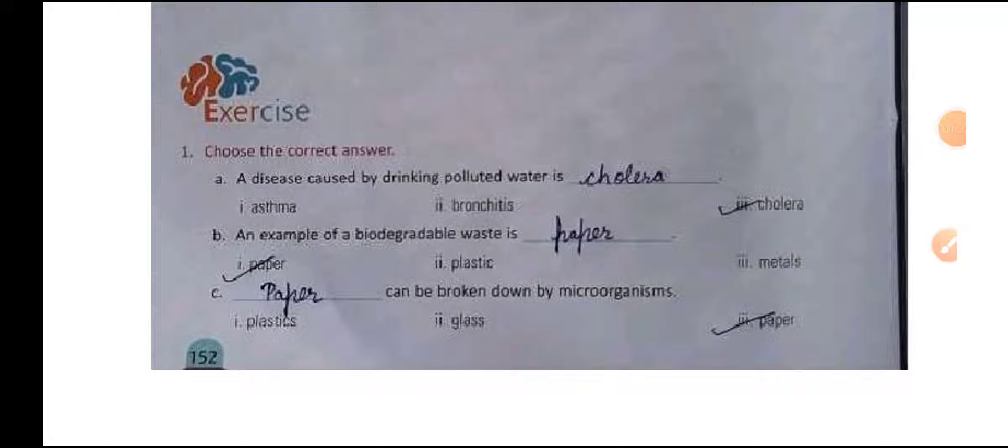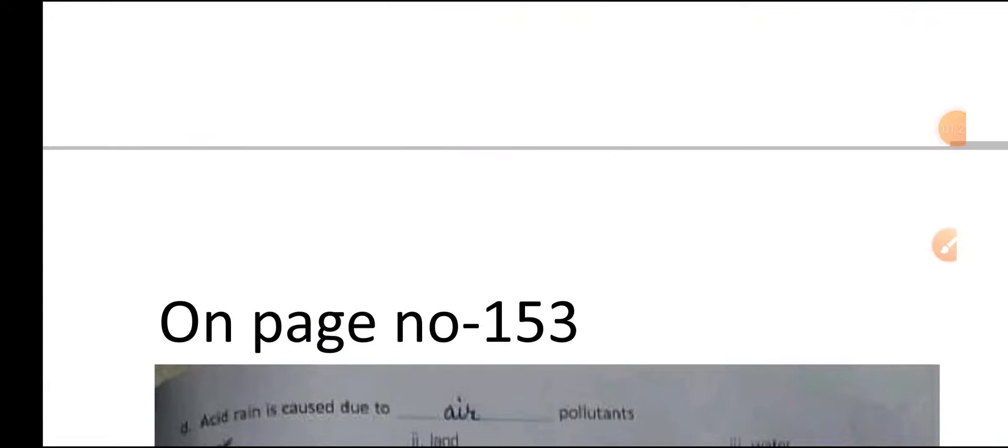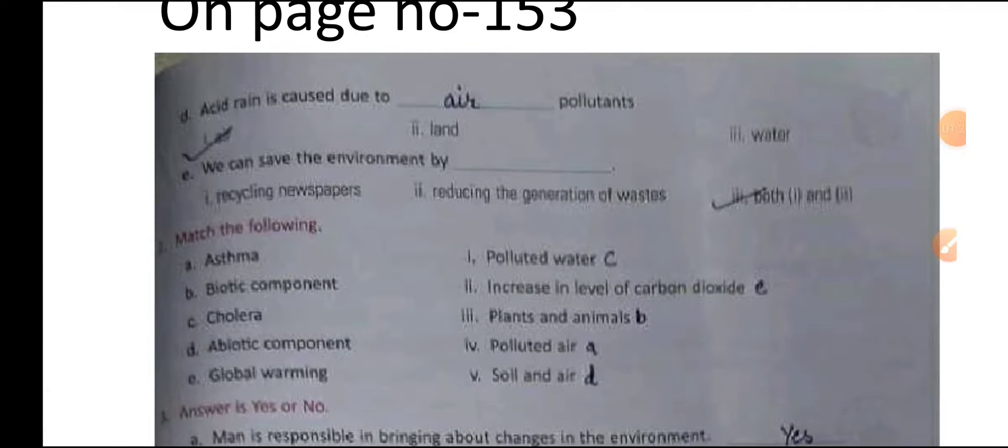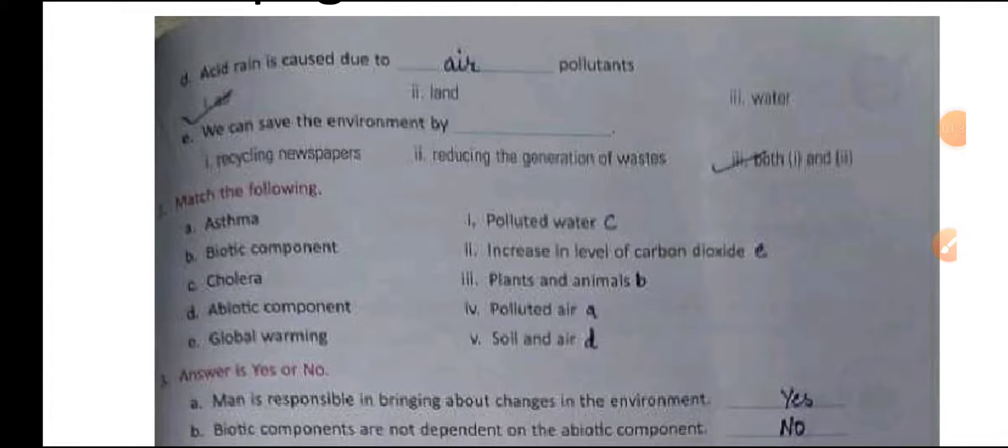Come on page number 153. Acid rain is caused due to polluted air. Next, we can save the environment by recycling newspaper, reducing the generation of waste and non-biodegradable waste—both A and B.